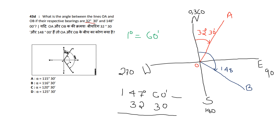Points O, A and O, B have respective bearings of 32 degrees 30 minutes and 148 degrees 0 minutes. The compass directions are north, east, south, west — corresponding to 0°, 90°, 180°, 270°, 360°. Starting from O, bearing OA is 32°30' and bearing OB is 148°0'. The included angle AOB is 148°0' minus 32°30'.